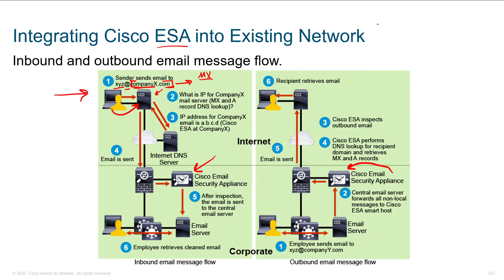Within DNS, when you register a domain name — say cisco.com — you don't have to have email associated with it, but if you want to participate in the global email system, you associate what's called an MX record with a particular host. That record says: if you have mail that needs to be delivered to cisco.com, our mail exchange is this host.